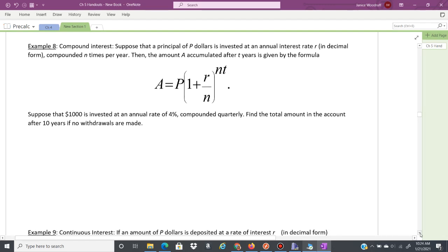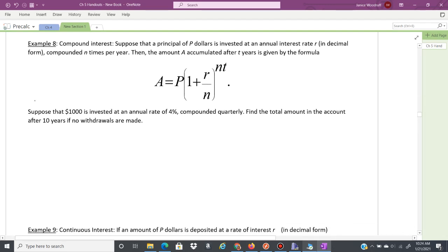So for example, you have suppose $1,000 is invested at an annual rate of 4% compounded quarterly. Find the total amount in the account after 10 years, and this is if no withdrawals are made. So here you have a principal of $1,000. You have a rate of 4%, which as a decimal is going to be 0.04. You are compounding quarterly, that is 4 times a year, 4 quarters, 4 times a year, and the total amount 10 years, so your time is going to be 10.